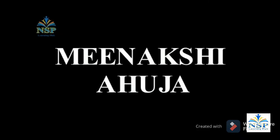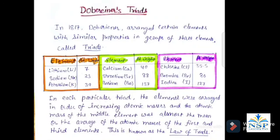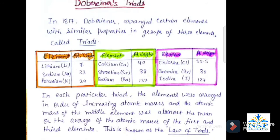Welcome to my channel NSP Learning Hub. Hello friends, today we study about Dobereiner's Triads. Dobereiner was the first scientist who grouped elements on the basis of increasing atomic weight in 1817. Dobereiner arranged 13 elements with similar properties in groups of three elements, which are called triads.